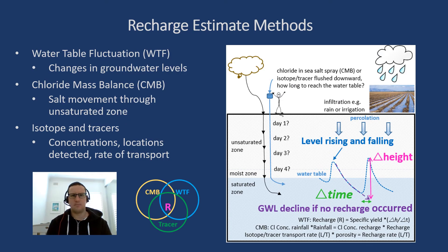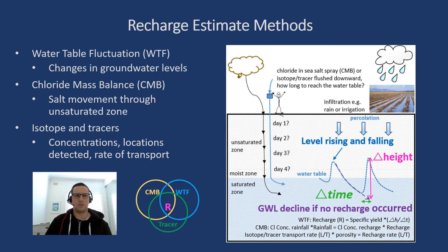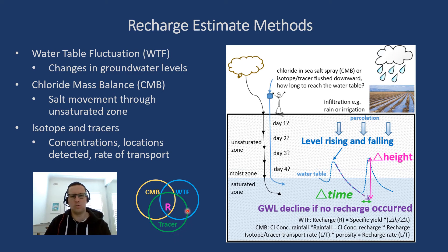There are various methods to estimate groundwater recharge. Three have been chosen for this study: water table fluctuation, chloride mass balance, and tracer. They all have their assumptions and limitations, and hopefully all the ranges coincide so we have a stronger confidence in the recharge value using the three methods.